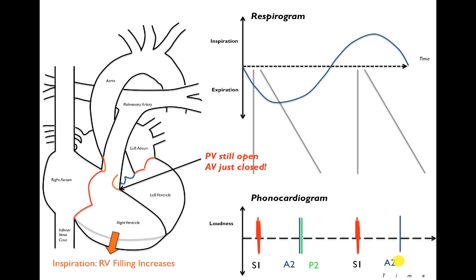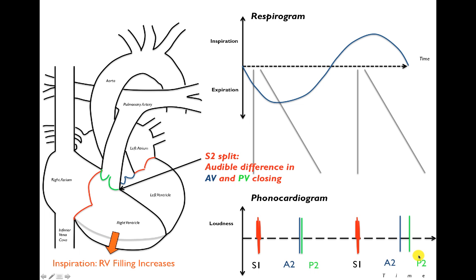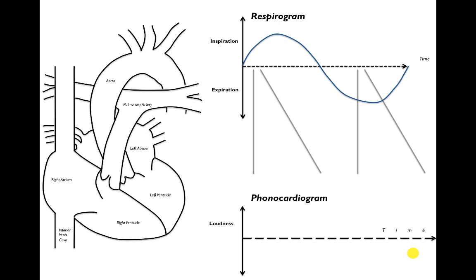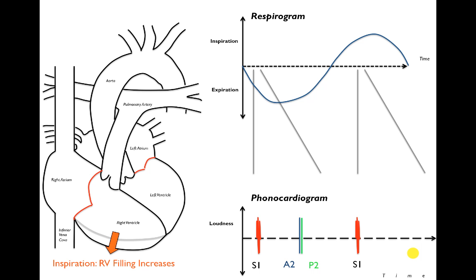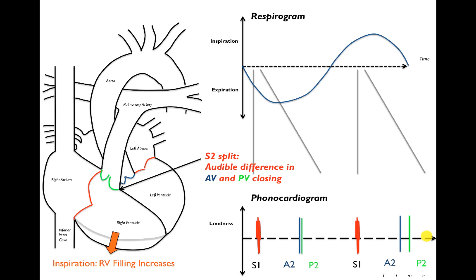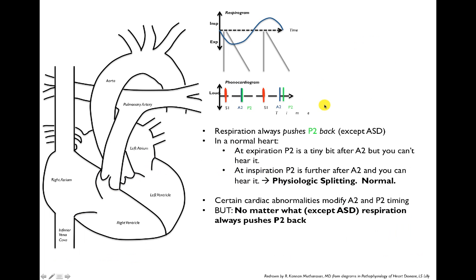On inspiration, RV filling increases. When you take a breath in, you create a suction effect because intrathoracic pressure drops and blood flows in from the right atrium into the right ventricle. I've drawn S1, the AV valves close, and the aortic and pulmonary valves open. As we approach A2 and P2, the aortic valve closes first — A2 is drawn on the phonocardiogram — but the pulmonic valve is still open. Because RV filling increases, it takes longer for the right ventricle to eject blood, so the pulmonic valve closes later, and you can hear the difference between A2 and P2: that's splitting.